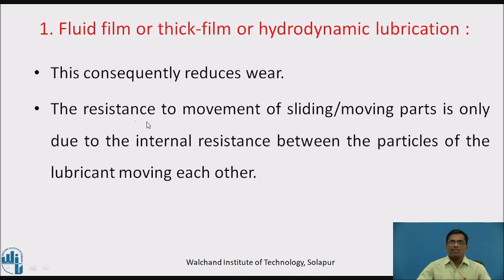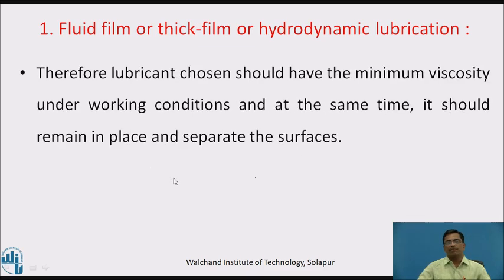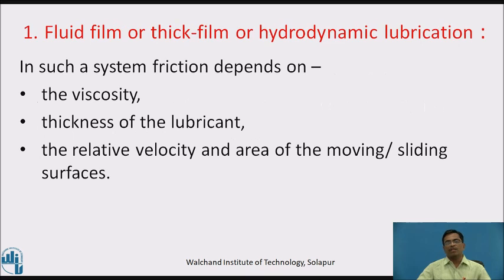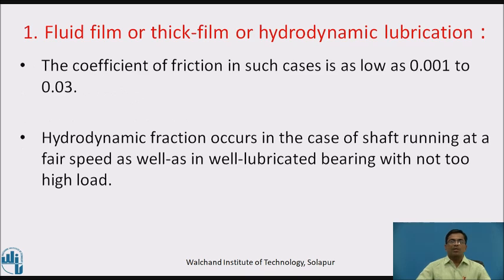The resistance to movement of sliding or moving parts is only due to the internal resistance between the particles of the lubricant moving against each other. Therefore, the lubricant chosen should have minimum viscosity under working conditions, and at the same time it should remain in place and separate the surfaces. In such a system, friction depends on the viscosity, thickness of the lubricant, and the relative velocity and area of the moving or sliding surfaces. The coefficient of friction in such cases is as low as 0.001 to 0.03.